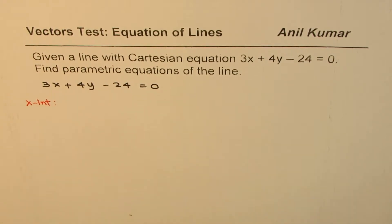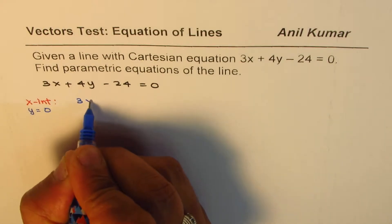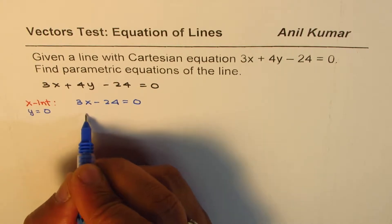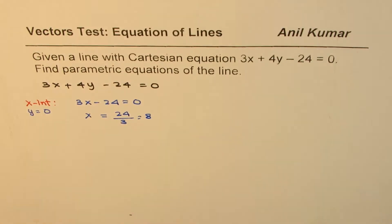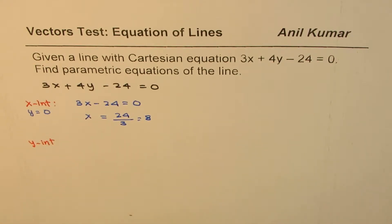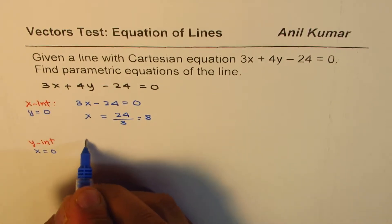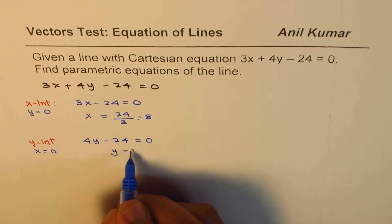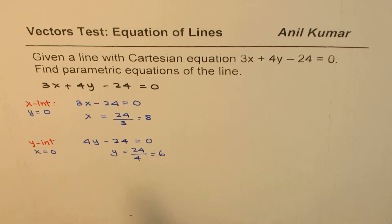For the x-intercept, y equals to 0. Substituting y equals 0, I get 3x minus 24 equals 0, which gives x equals 24 divided by 3, which is 8. For the y-intercept, x equals 0. Substituting x equals 0, I get 4y minus 24 equals 0, which gives y equals 24 divided by 4, which is 6.